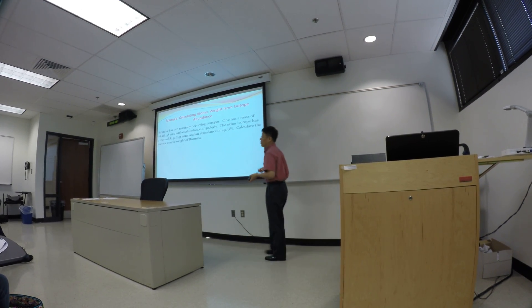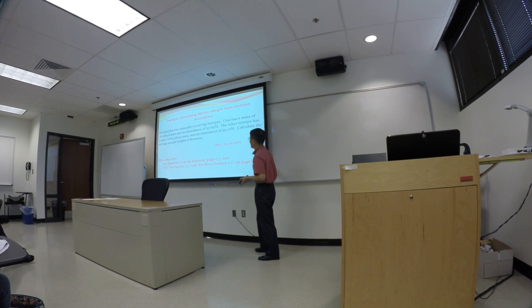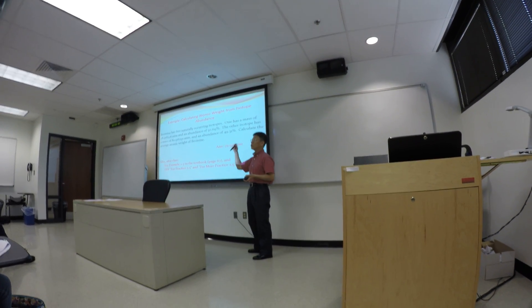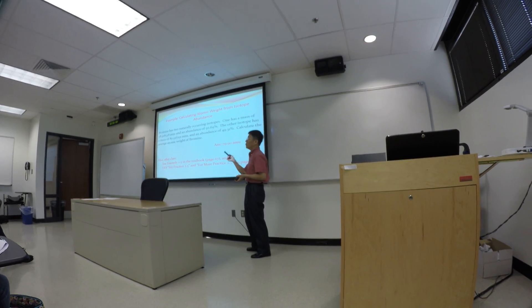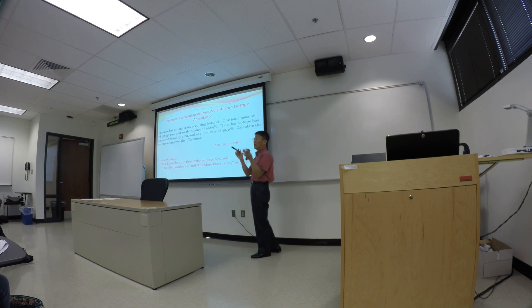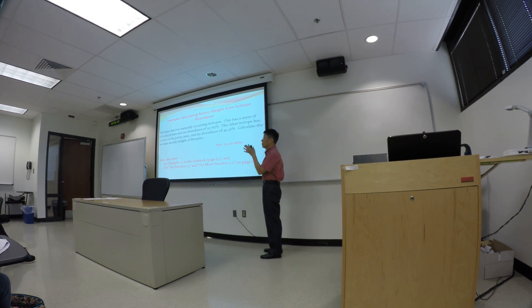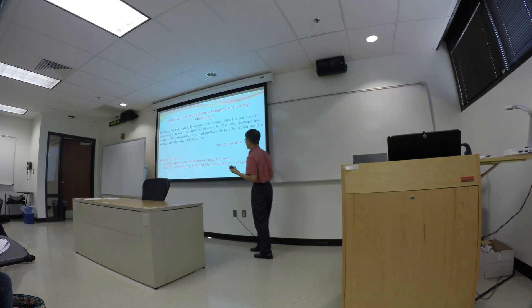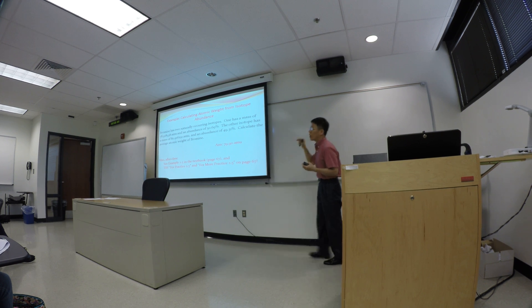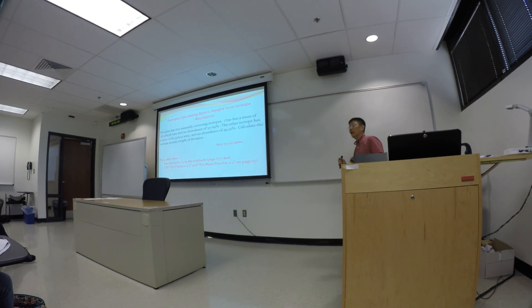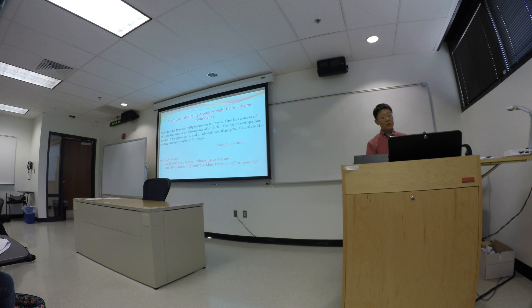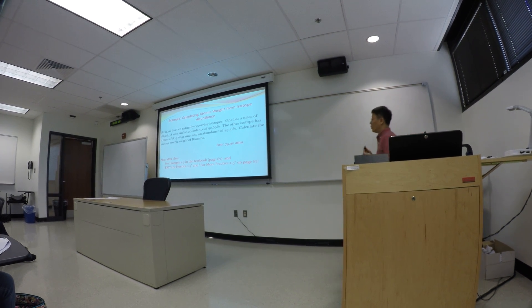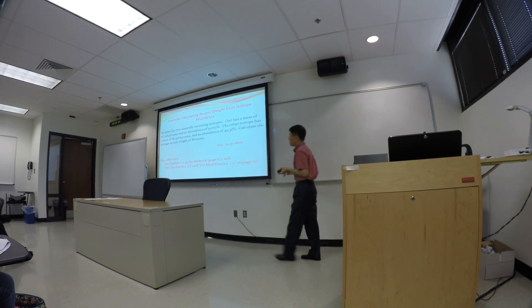For this type of calculation, remember the equation: weighted average mass equals the fraction of each isotope — percentage converted into decimal — times the mass of each isotope, summed together. In your textbook on page 67 there are more practice problems. On next Thursday's exam, I will ask you questions about this.